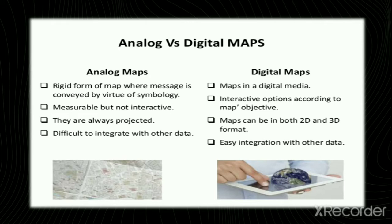Comparing an analog map with a digital map: an analog map is a rigid form of map where the message is conveyed by virtue of its signs and symbols, and it is measurable in nature but not interactive. A digital map is created in digital media and is highly interactive. Maps are always projected in an analog map, whereas a digital map can be represented in both two-dimensional and three-dimensional formats. Analog maps are difficult to integrate with other data, whereas digital maps are very easy to integrate.